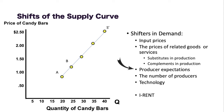Future expectations is our next shifter. If expected price levels are going to fall, supply will increase today — producers try to get that production out now. If expected price levels increase, supply will decrease today. For number of producers and sellers: if there's an increase in sellers, there's going to be an increase in supply. If there's a decrease in sellers, there's going to be a decrease in supply.